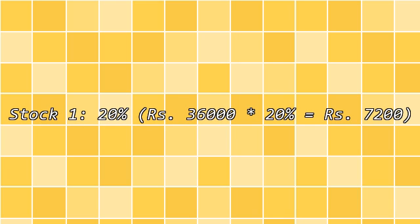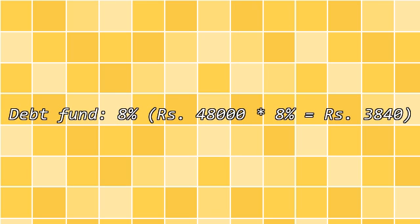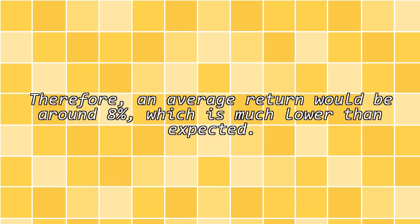Stock 1: +20% on ₹36,000 invested = +₹7,200. Stock 2: -5% on ₹36,000 invested = -₹1,800. Debt fund: 8% on ₹48,000 invested = +₹3,840. Therefore, the average return would be around 8%, which is much lower than expected.